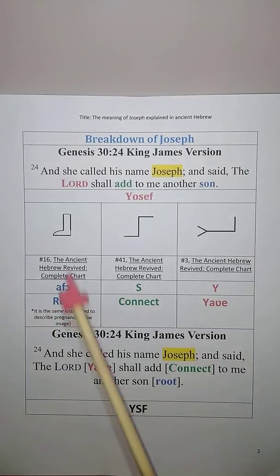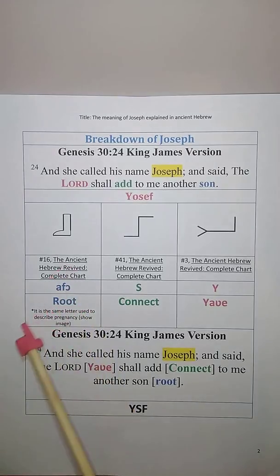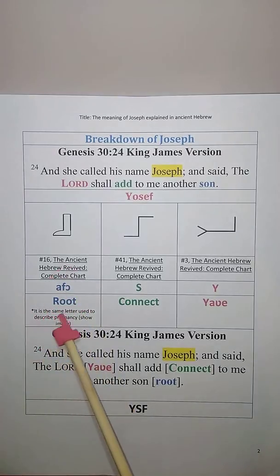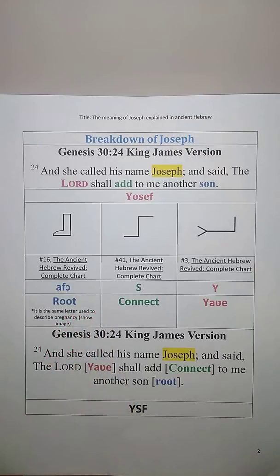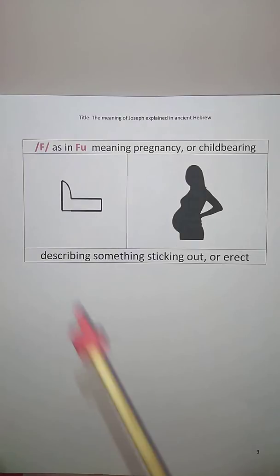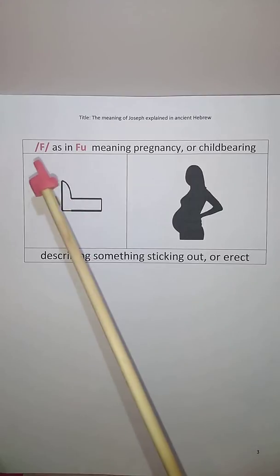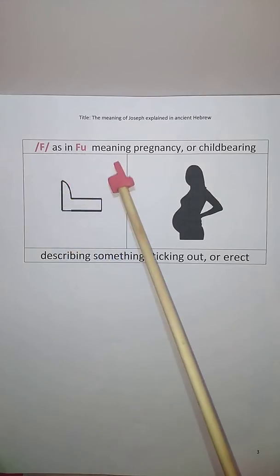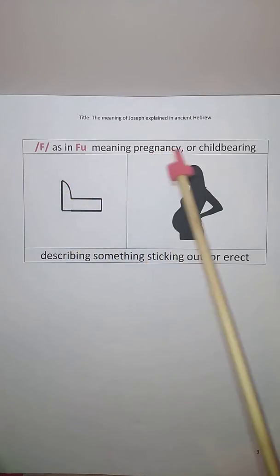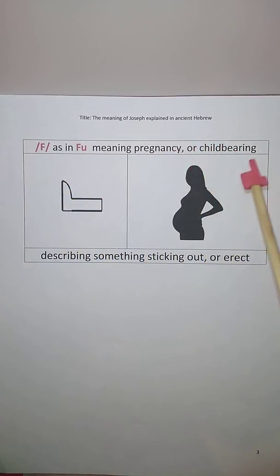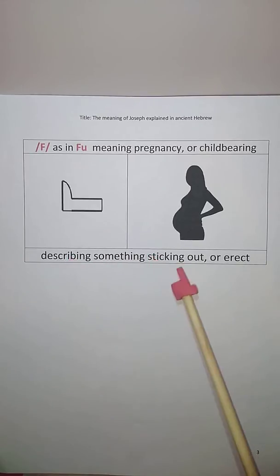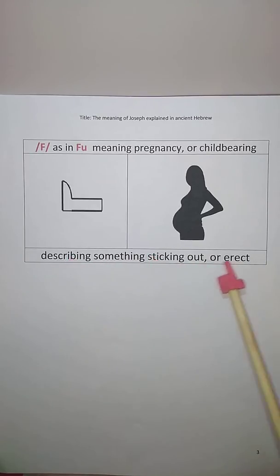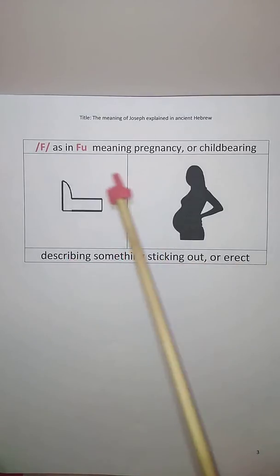The Afo means root. The Afo is the same letter used to describe pregnancy — the Fuh, meaning pregnancy or childbearing — describing something sticking out or erect, as shown here.